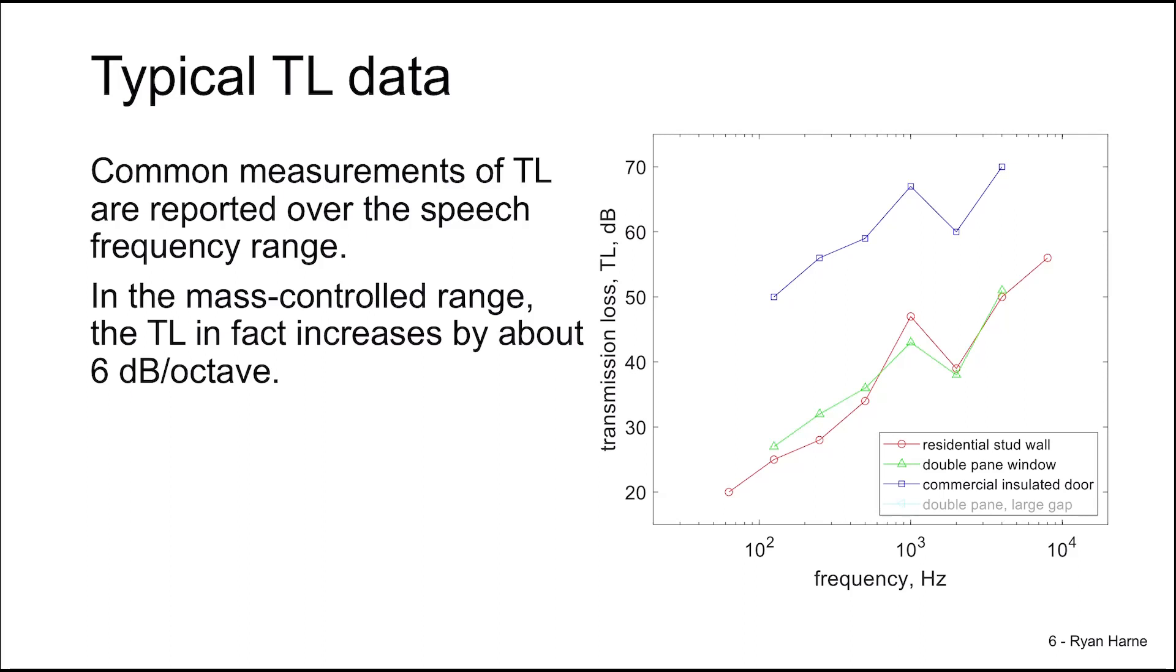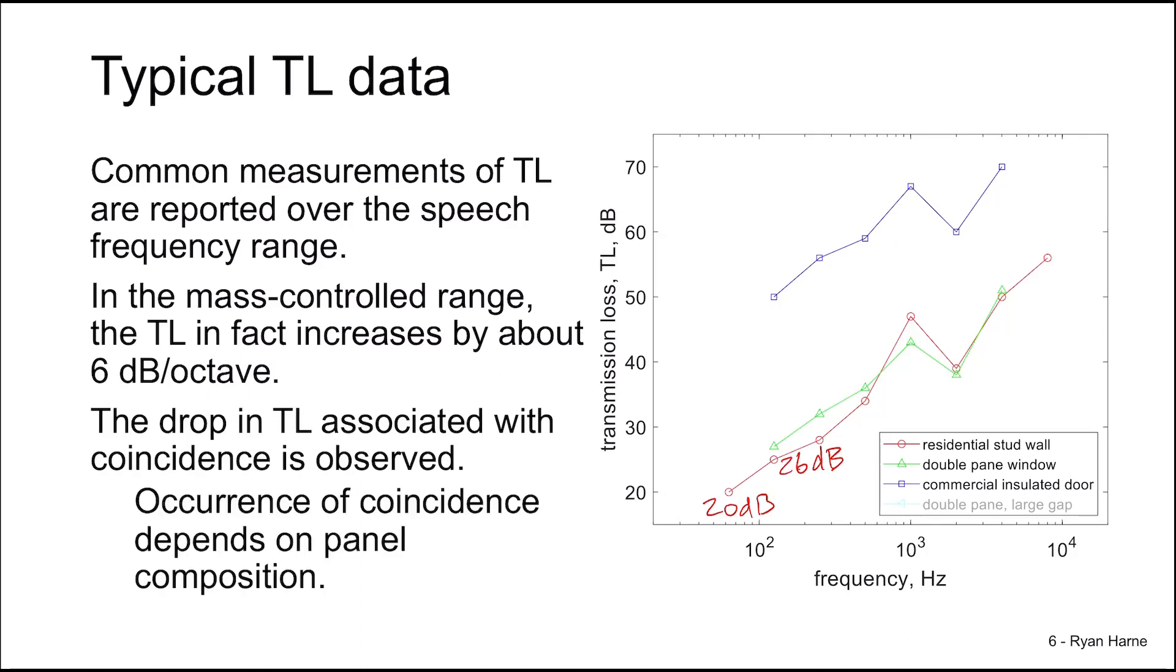In each case, in the mass controlled region, we have around a 6 dB per octave gain. So for instance, going from 20 dB for the residential stud wall at 63 Hz up to about 26 dB at 125 Hz. That's 6 dB per octave increase holds. The drop in transmission loss due to coincidence is observed in each case. But that's not necessarily going to be the case for all panels. The occurrence of coincidence depends on how that panel is composed.